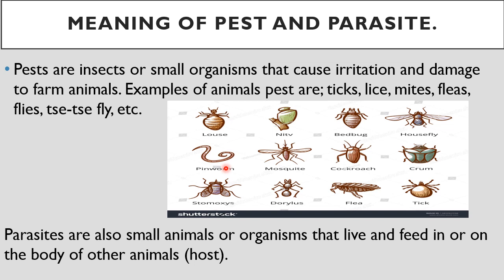Now let's look at parasites. Parasites are small animals or organisms that live and feed in or on the body of other animals. Those on the outside are called external parasites, while the ones inside are called internal parasites. There are those that stay in the body, like worms — this pinworm is a typical example of an internal parasite.